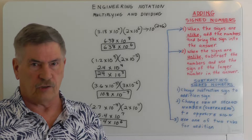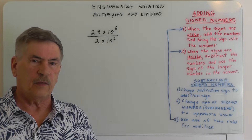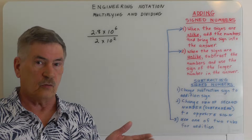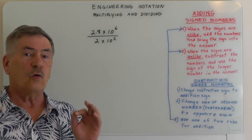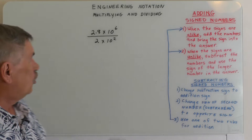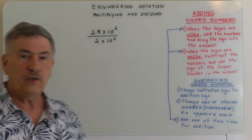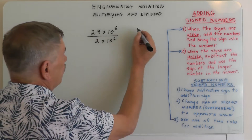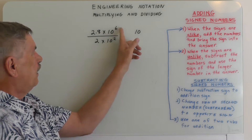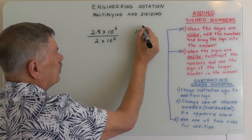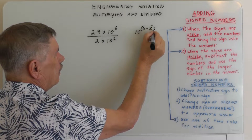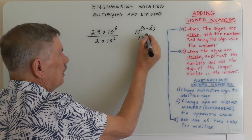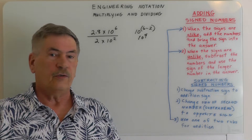Now let's look at division. When dividing numbers in engineering or scientific notation, you will be subtracting the exponents. You take the exponent in the numerator and subtract the exponent in the denominator from it. For example, 10 to the 6 divided by 10 to the 2: 6 minus 2 gives 10 to the fourth. Pretty simple.